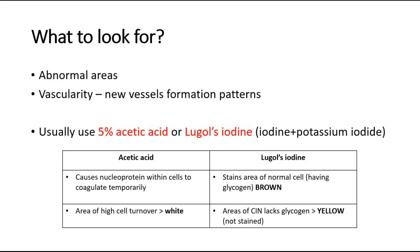For Lugol's iodine, it stains the areas of normal cells which contain glycogen, so normal cells will become brown in color. Whereas those abnormal areas lacking glycogen are not stained and will appear yellow in color. In summary: with acetic acid, the abnormal area turns white; with Lugol's iodine, the abnormal area appears yellow.